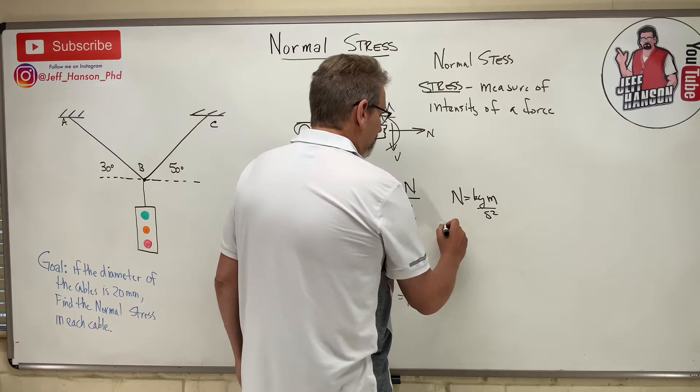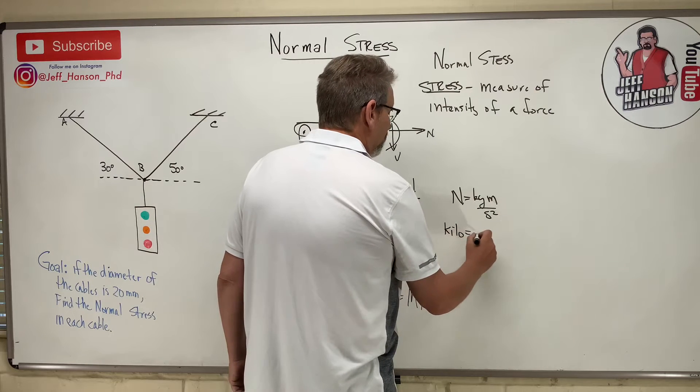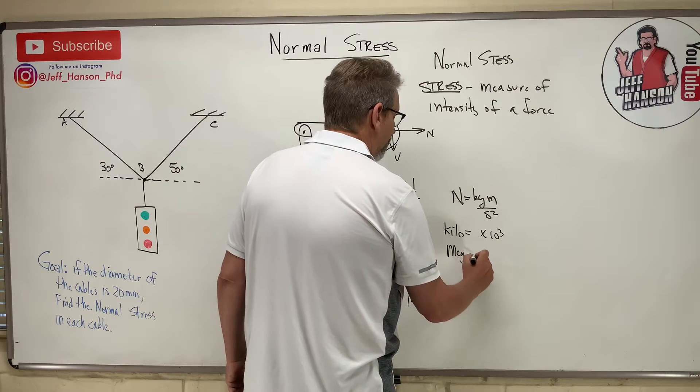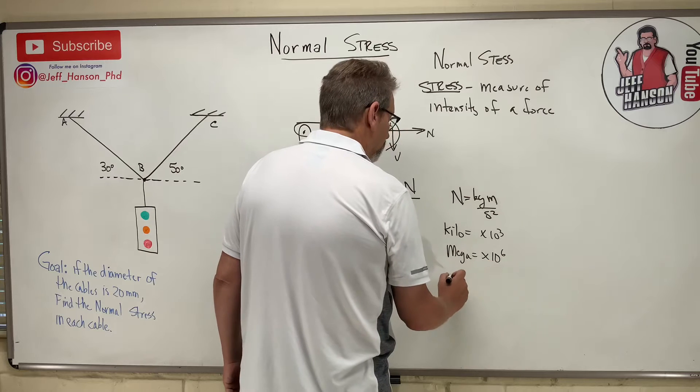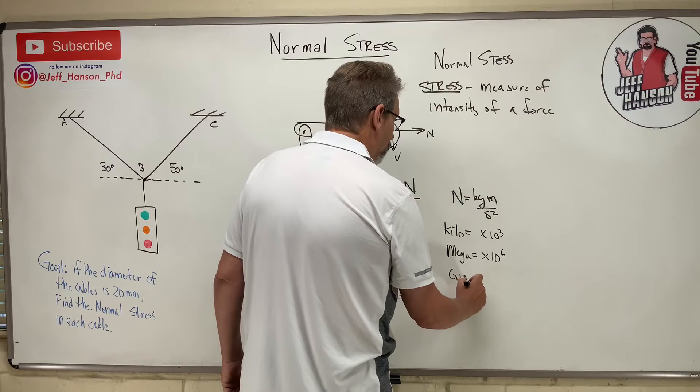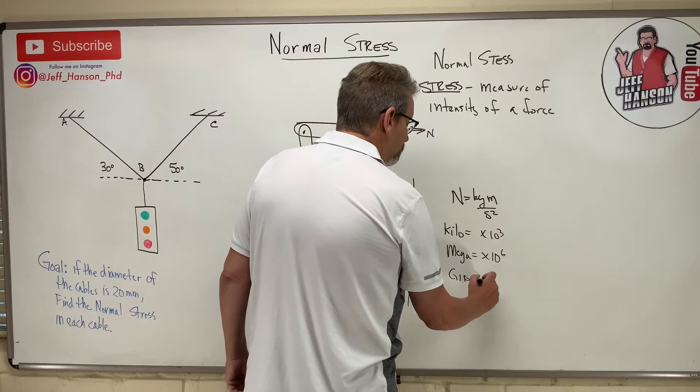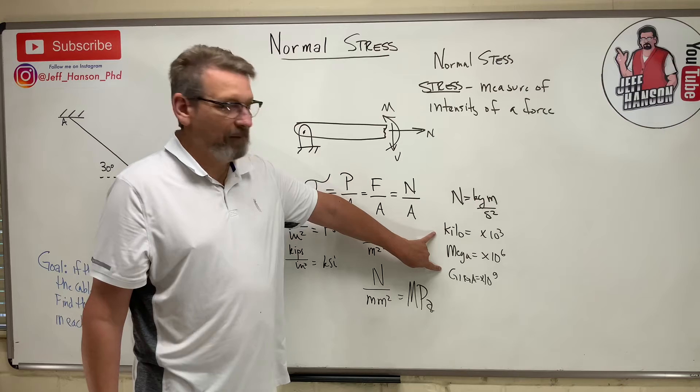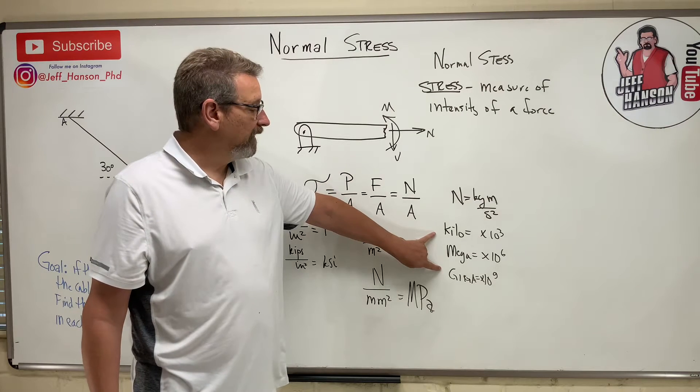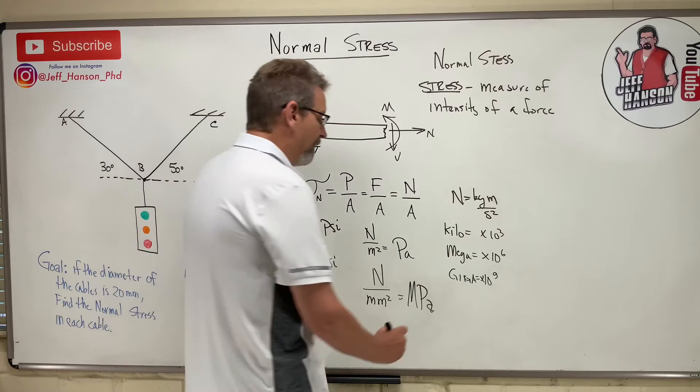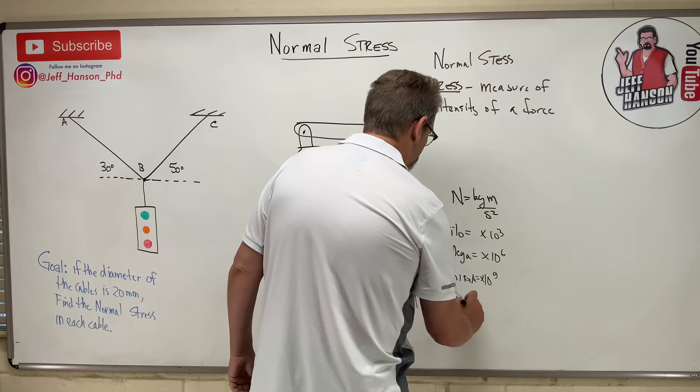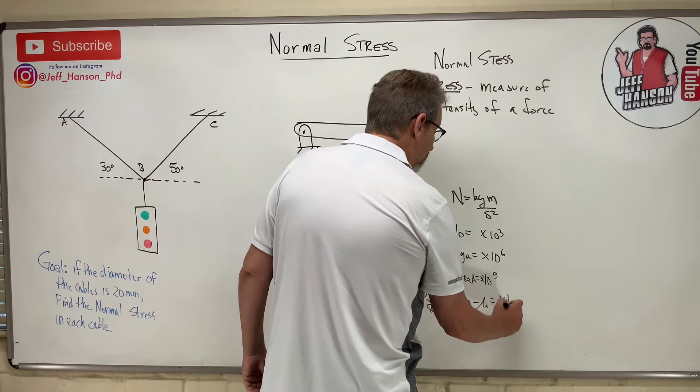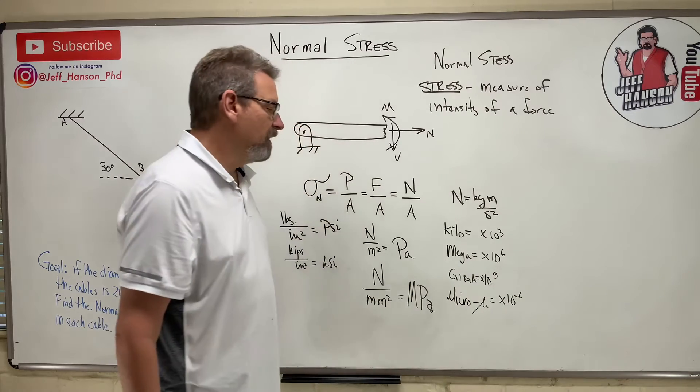And the other thing that you really need to remember in solids is that kilo is times 10 to the 3, mega times 10 to the 6, and then giga, whoa, times 10 to the 9. And it goes on from there, but these are the ones you'll see most commonly in solids. You also might see micro, and micro is given with a mu, and that is times 10 to the negative 6.